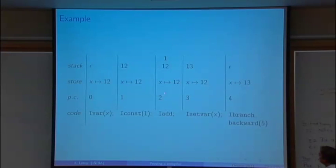Const of 1, PC is 2, stack is now 1 on top, 12 below. Add takes 1 and 12 off the stack, pushes back 13. Set var takes 13 off the stack, updates x, sets PC to 4. And branch backward of 5. So morally we increment the PC to 5 and then we branch backward by 5 instructions. So we go back to the beginning and that's an infinite loop.